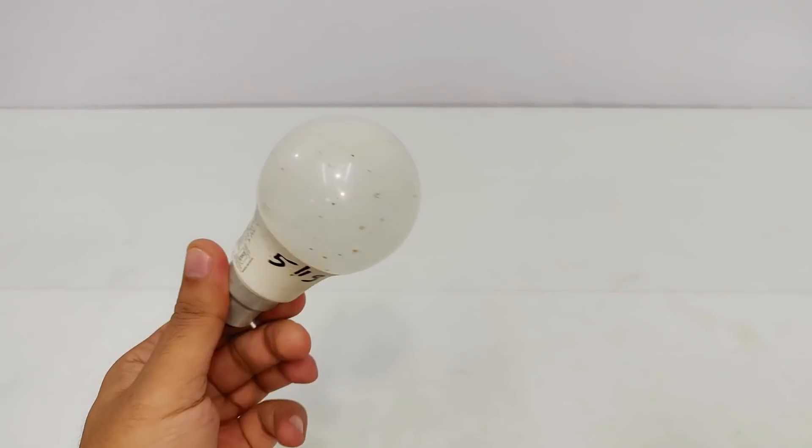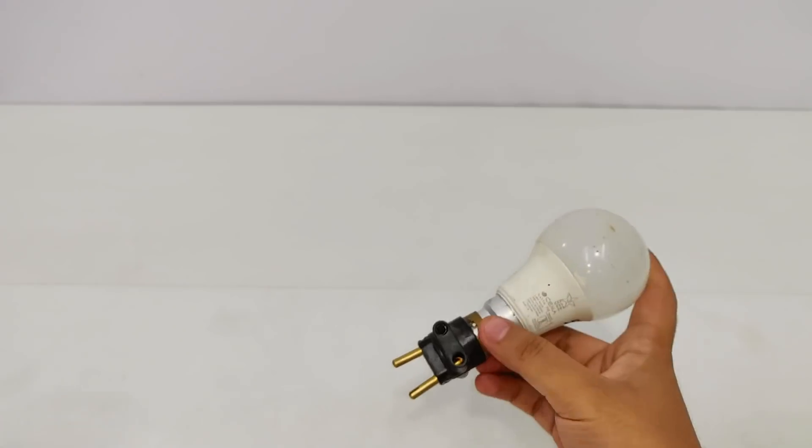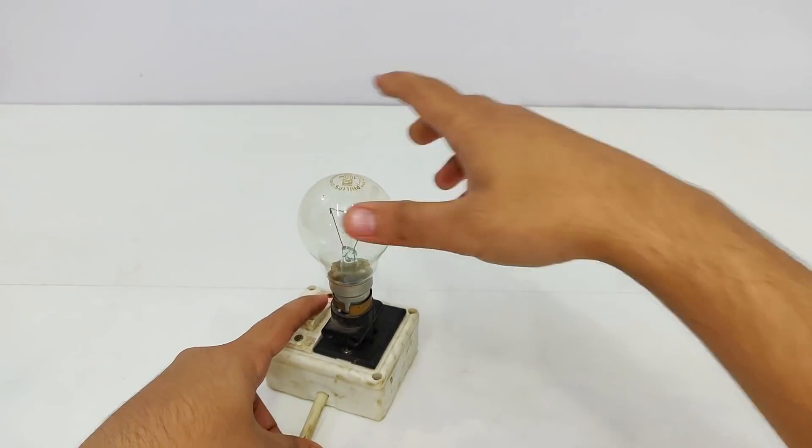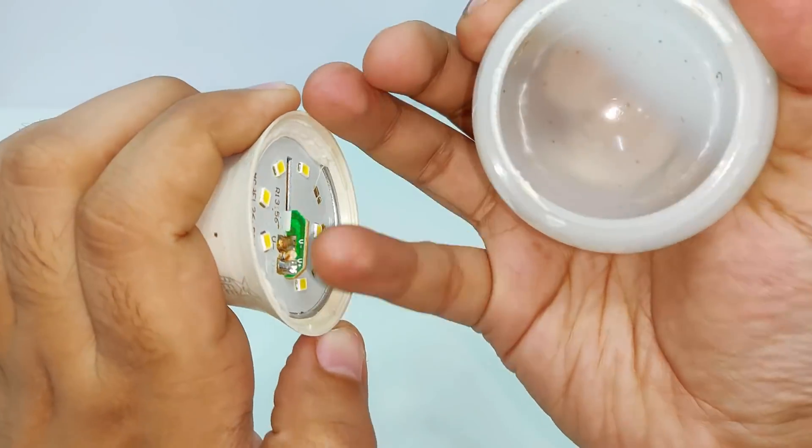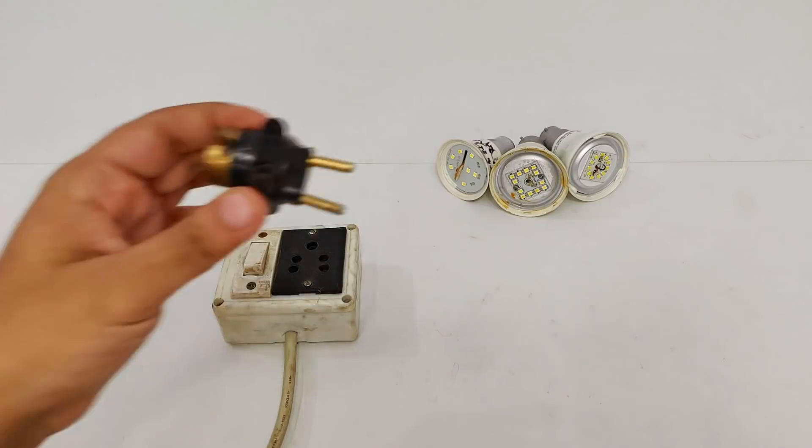Hi guys, this is an LED bulb with a power rating of 7 watts, and as you can see it is broken. Now unlike the incandescent bulbs, the LED bulbs come with a pre-installed driver circuit.